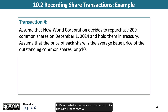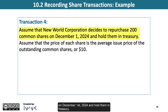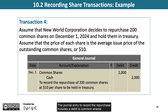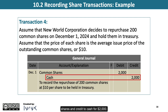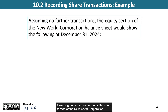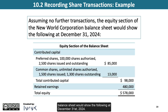Let's see what an acquisition of shares looks like with Transaction 4. Assume that New World Corporation decides to repurchase 200 common shares on December 1, 2024 and hold them in treasury. The price of each share is the average issue price of the outstanding common shares, or $10. The journal entry to record the repurchase includes a debit to common shares and credit to cash for $2,000. The equity section of the New World Corporation balance sheet would show the following at December 31, 2024.